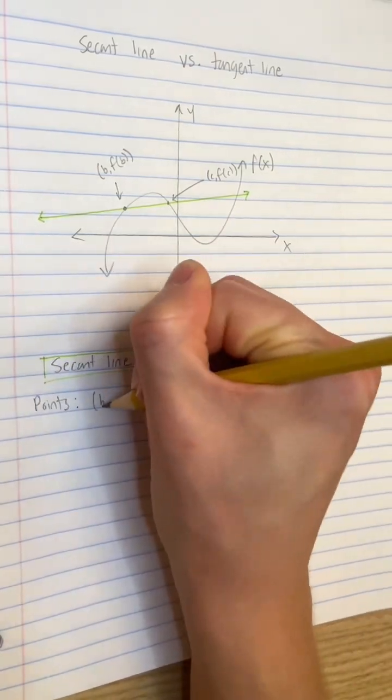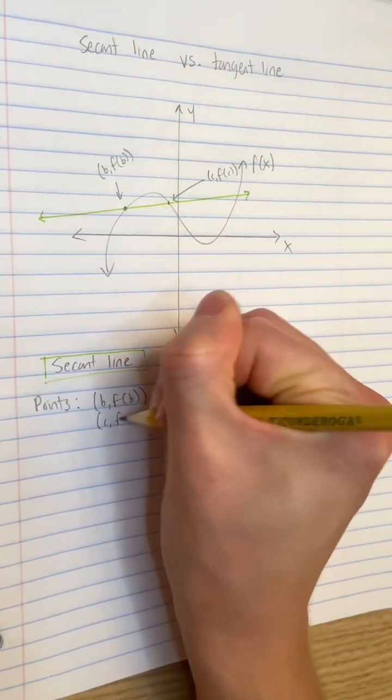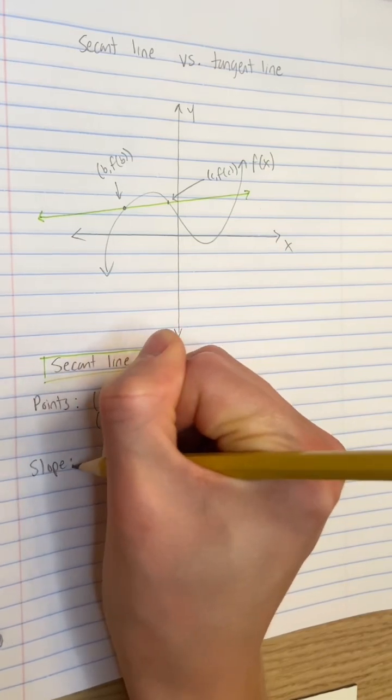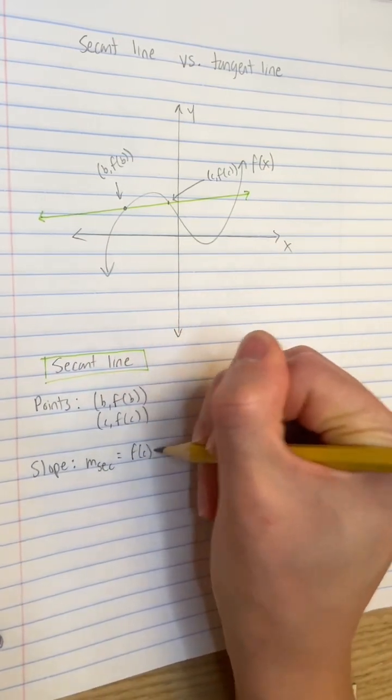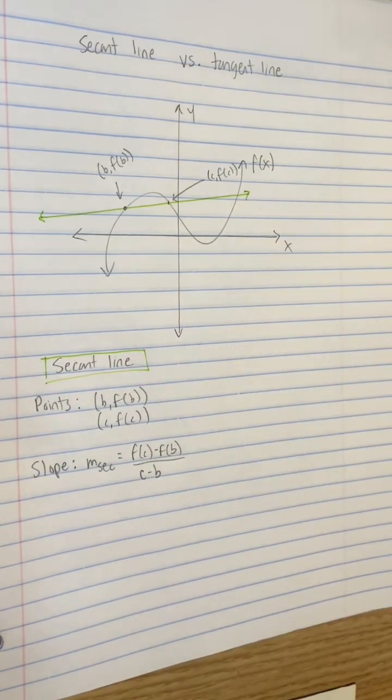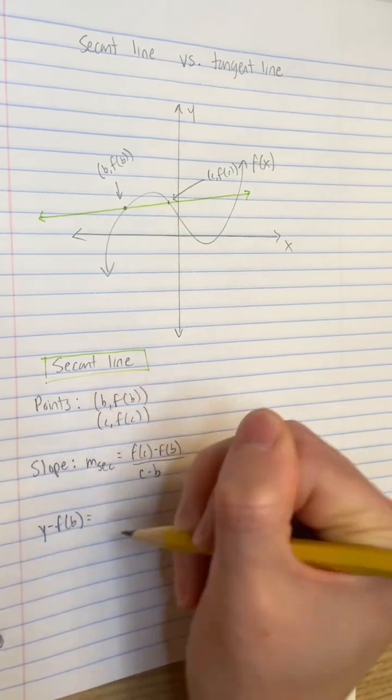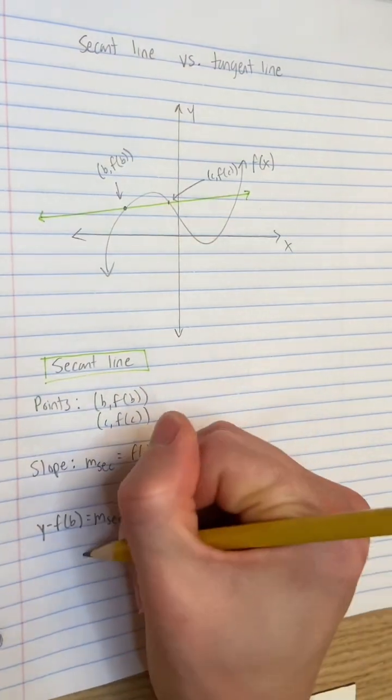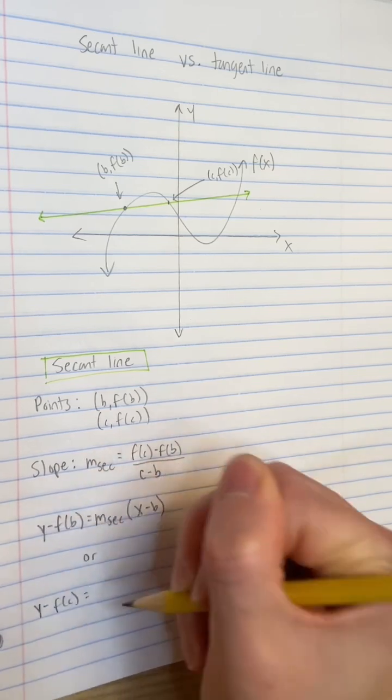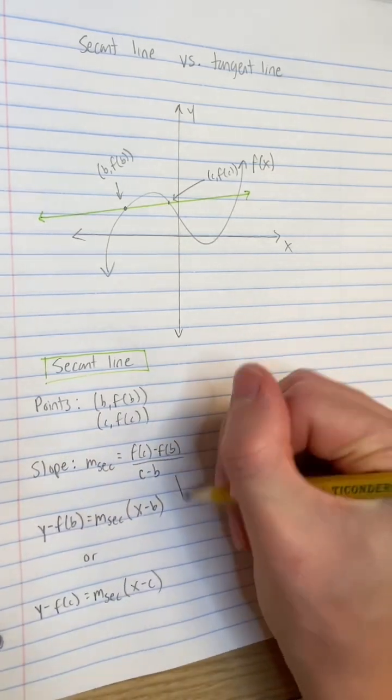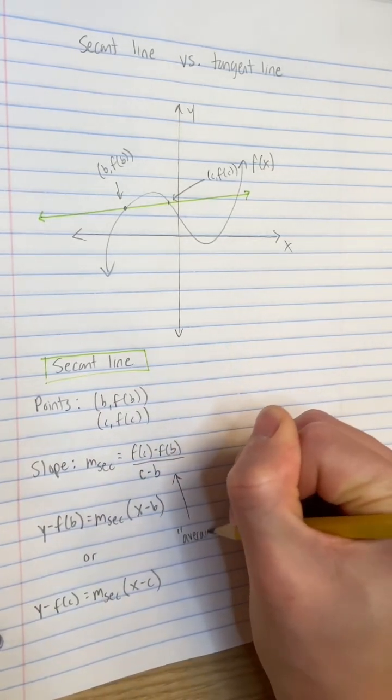The slope of this line can be easily calculated using the slope formula from algebra, the difference in the y coordinates divided by the difference in the x coordinates. Plug that slope and either point into point slope form and we have the equation of the secant line. Its slope can be thought of as the average rate of change of f of x from x equals b to x equals c.